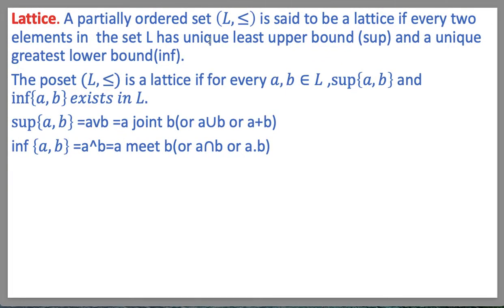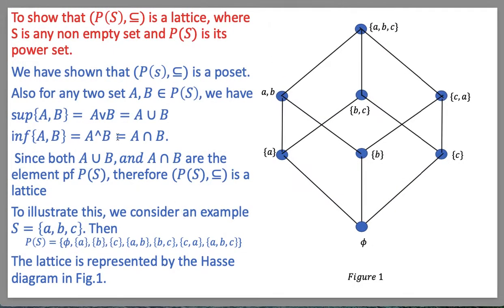A partially ordered set L together with the relation less than or equal to is said to be a lattice if every two elements in L have a unique least upper bound and a unique greatest lower bound. L is a lattice if for every a, b belonging to L, supremum{a, b} and infimum{a, b} exist in L. Supremum{a, b} is called the join, which in the case of sets is a union b; infimum{a, b} is called the meet, which in the case of inclusion is a intersection b.